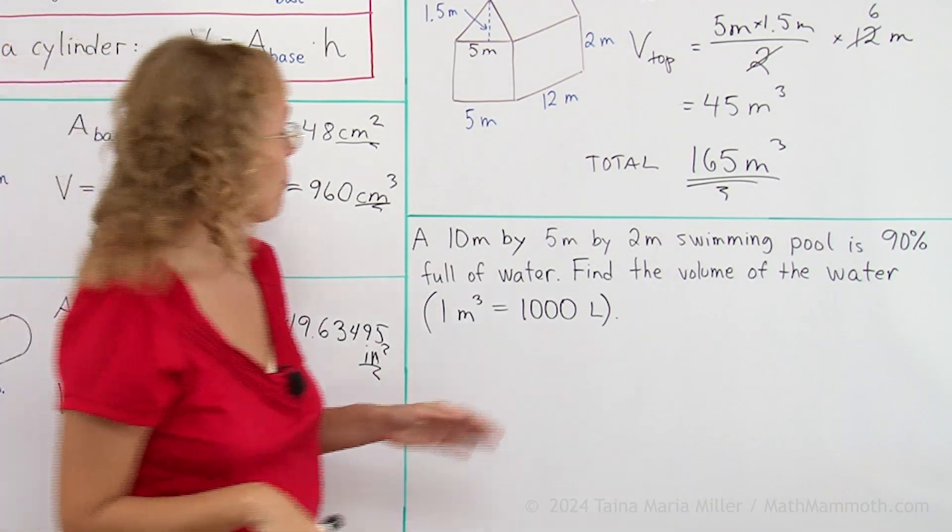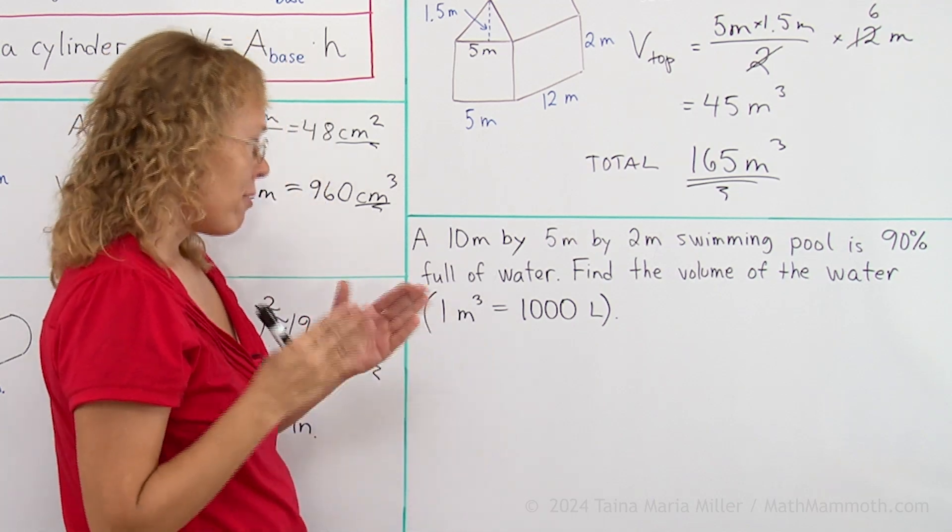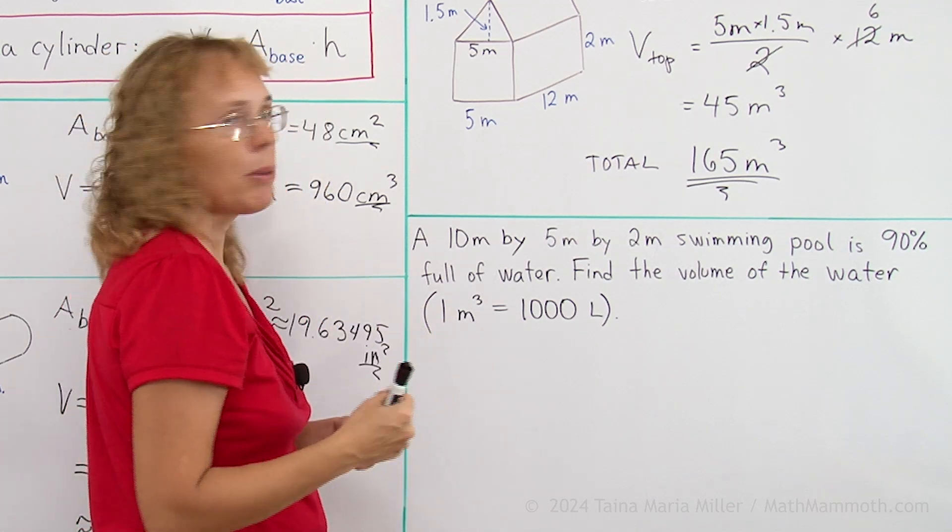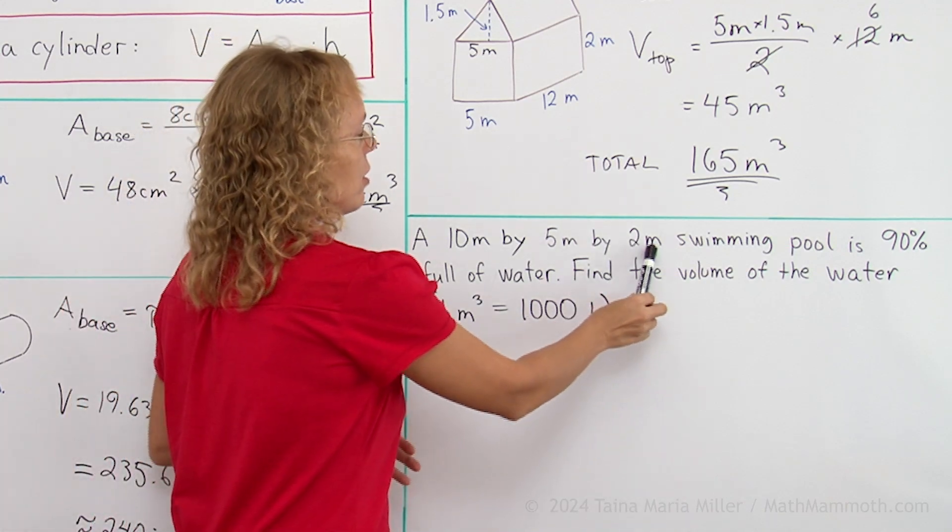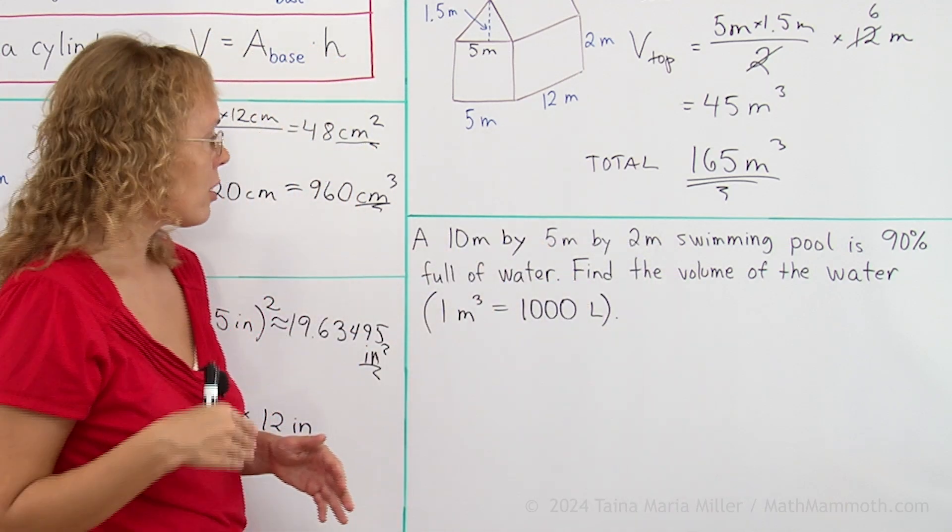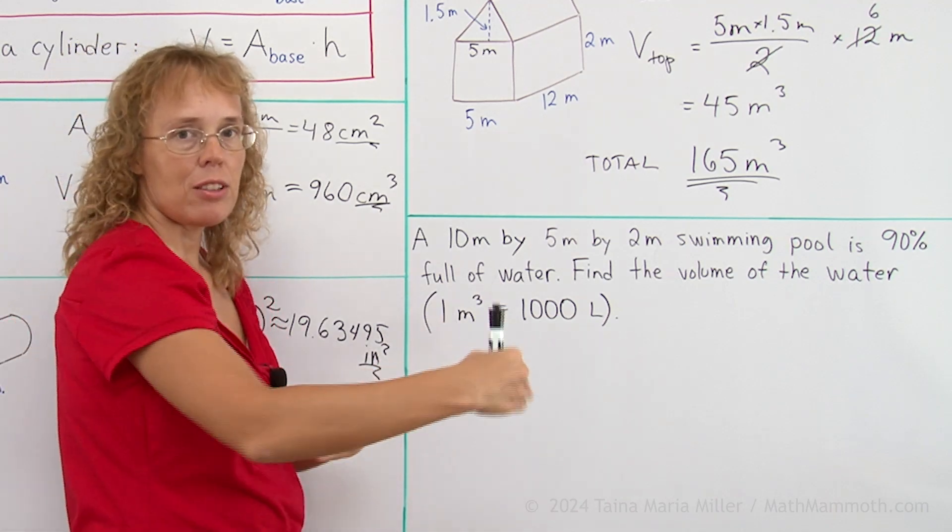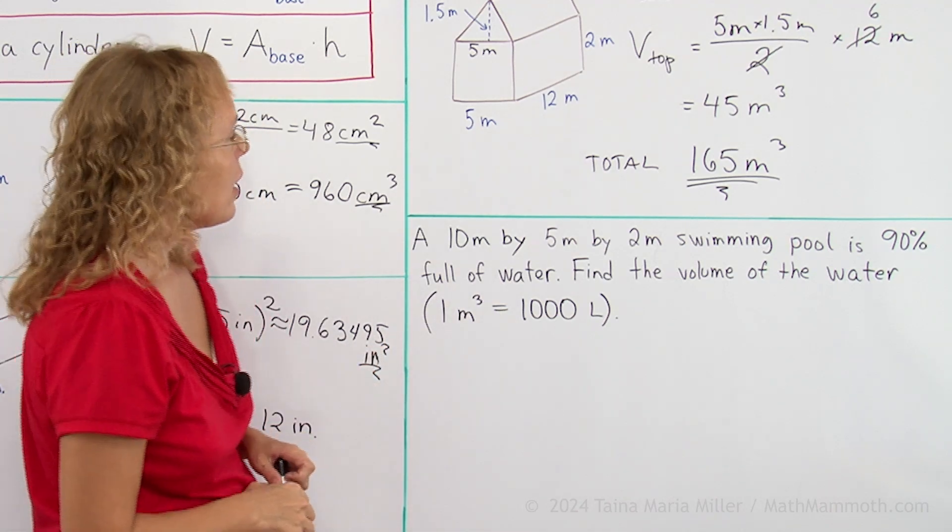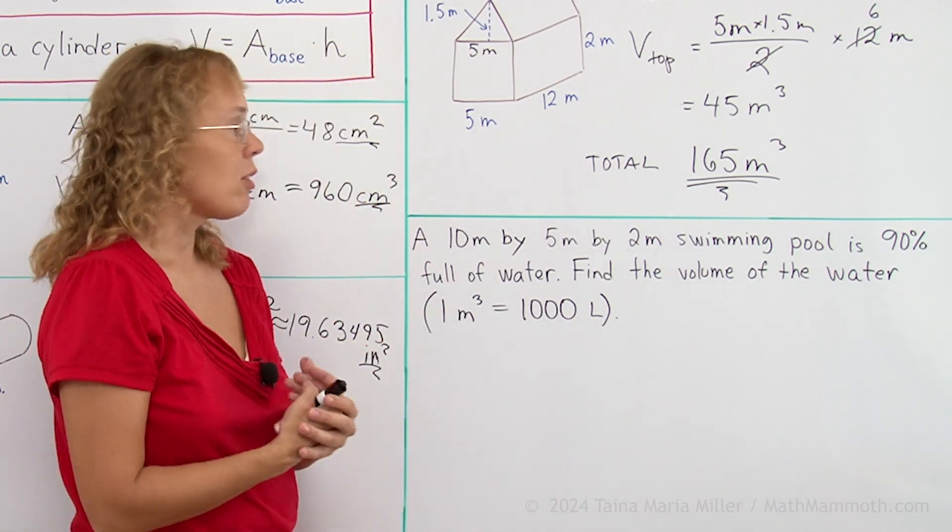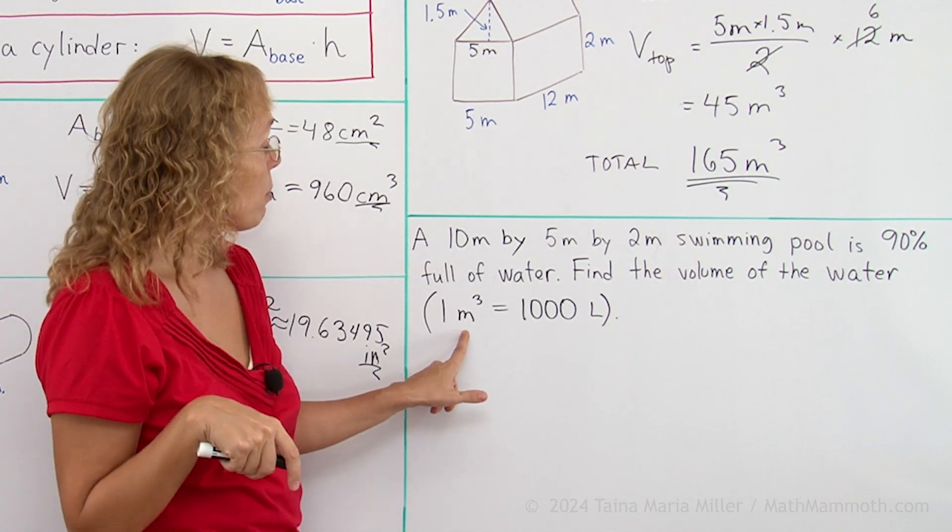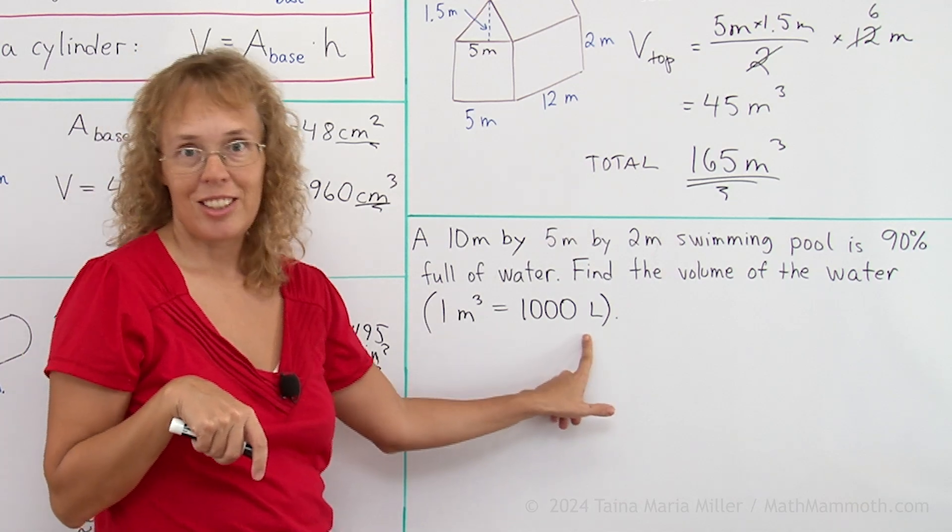Lastly we have a swimming pool, a 10 meters by 5 meters by 2 meters swimming pool. Now this is like a box again. Again, its height or depth is 2 meters and 10 meters by 5 meters rectangle on top. And it is 90% filled with water. Find the volume of the water. Here's a little fact to help us. One cubic meter is equal to 1000 liters.